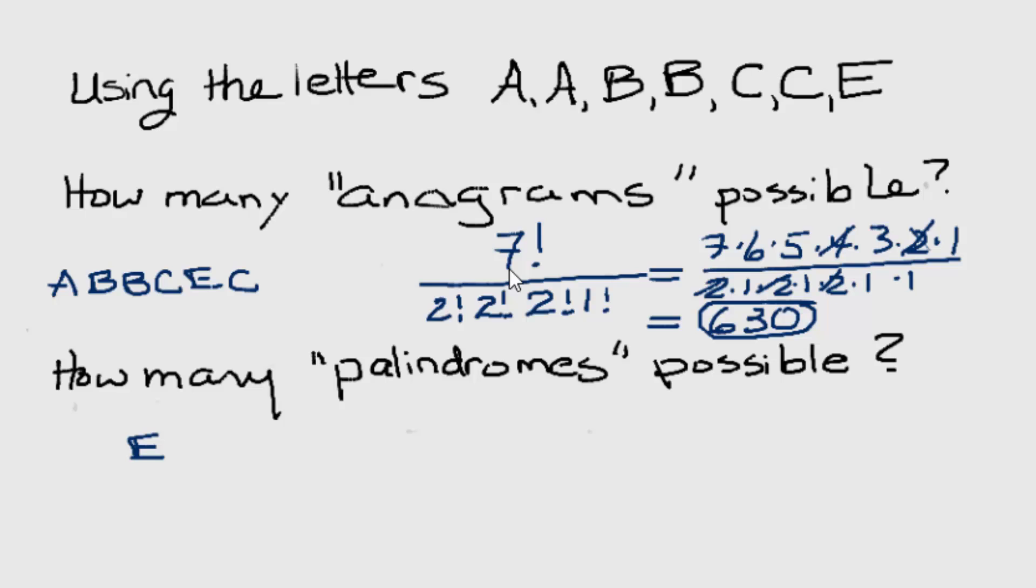Then on either side of the letter, we could have pairs, like perhaps the B is next to the E on the left and the right. Perhaps the A comes after that, has to be on the left and the right, and then maybe the C comes next. So this word is a palindrome. It reads the same backwards and forwards.